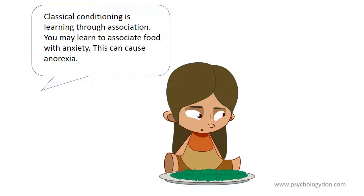Classical conditioning is learning through association. Anorexia may develop because a person associates food with anxiety.